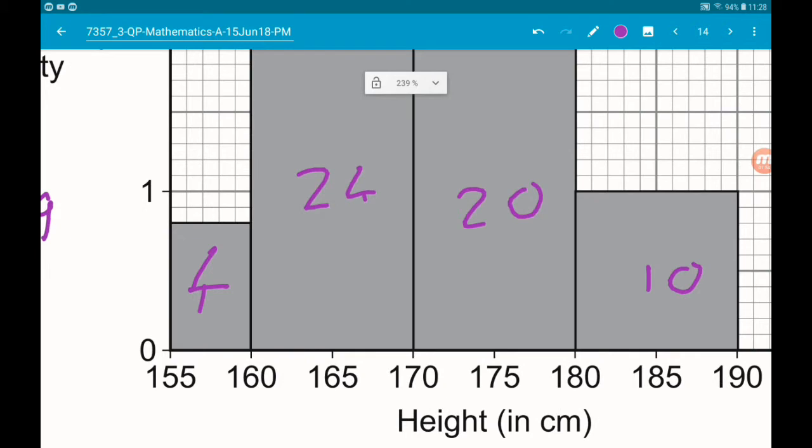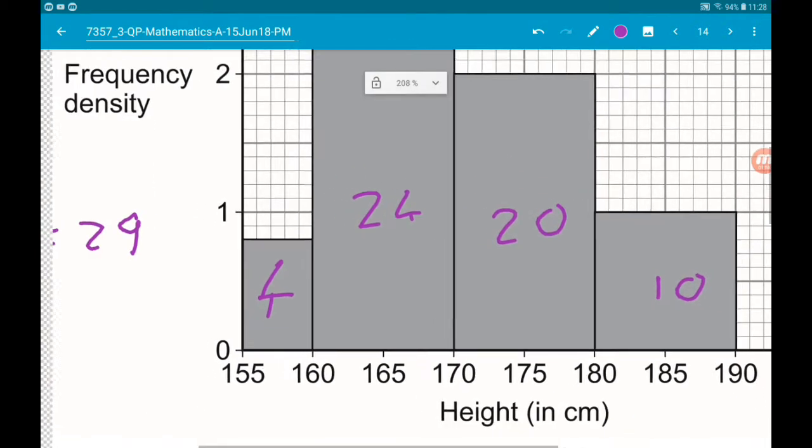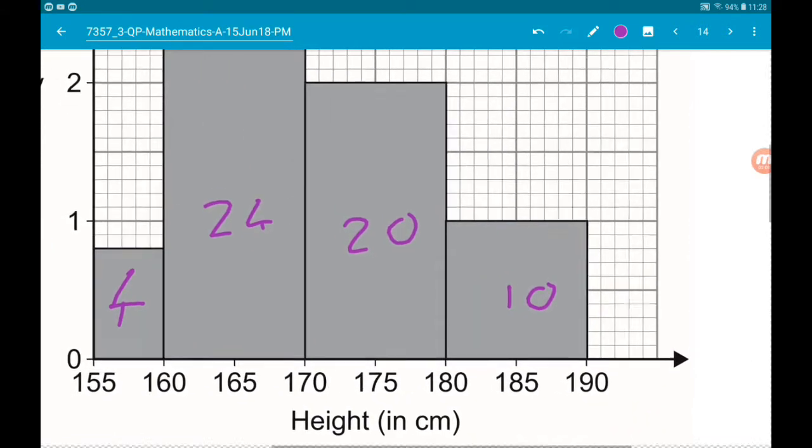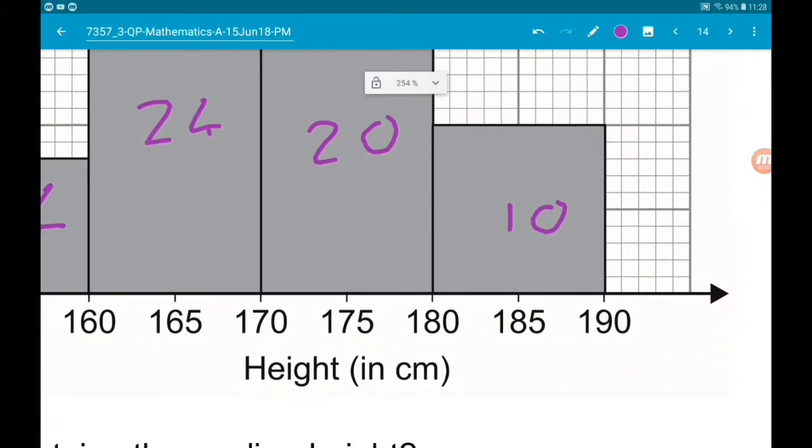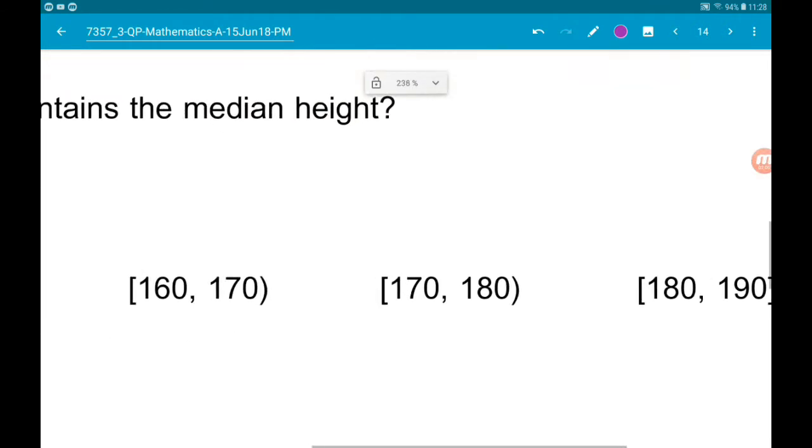So that's 4 in the first, 24 in the second, so that takes us up to 28. So then the 29th, 30th bit of data is going to be 170 to 180. Cool.